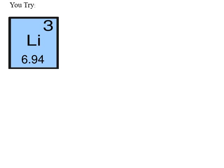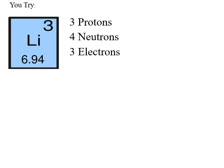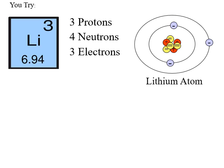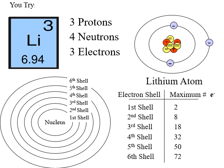Go ahead and pause the video and try the lithium problem on your own — figure out how many protons, neutrons, and electrons. Hopefully you got three protons, four neutrons, and three electrons. This is what a basic model of a lithium atom looks like. We know the electrons are in this configuration because you have two in the first shell and then one more in the second shell — remember, the first shell can only hold two, so the third electron must go into the second shell. The valence shell would be the second shell.